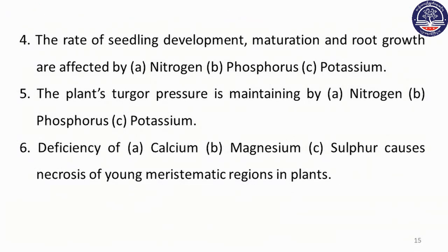Phosphorus affects the rate of seedling development. The plant's turgor pressure is maintained by nitrogen, phosphorus, and potassium. Deficiency of calcium, magnesium, and sulfur causes related symptoms. Necrosis of the meristematic regions in plants can occur due to calcium deficiency.